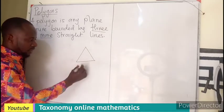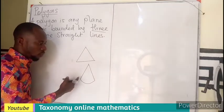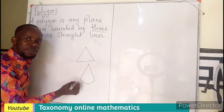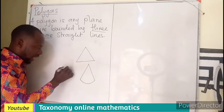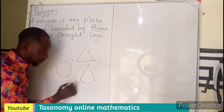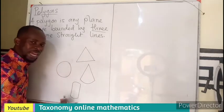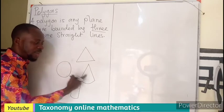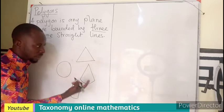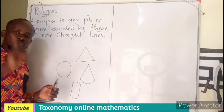So this is a polygon. If I have something like this — two straight lines with a curve — this is not a polygon. Likewise, a circle is not a polygon because there are no straight lines. If I have a cylinder, that's two straight lines and a curve. So these three figures are not polygons, but shapes that have all straight sides are.